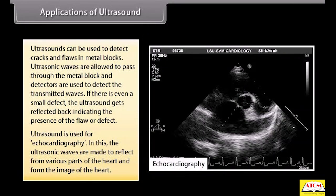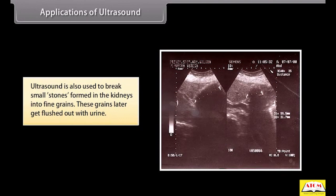Ultrasound is used for echocardiography. In this, the ultrasonic waves are made to reflect from various parts of the heart and form the image of the heart. Ultrasound is also used to break small stones formed in the kidneys into fine grains. These grains later get flushed out with urine.